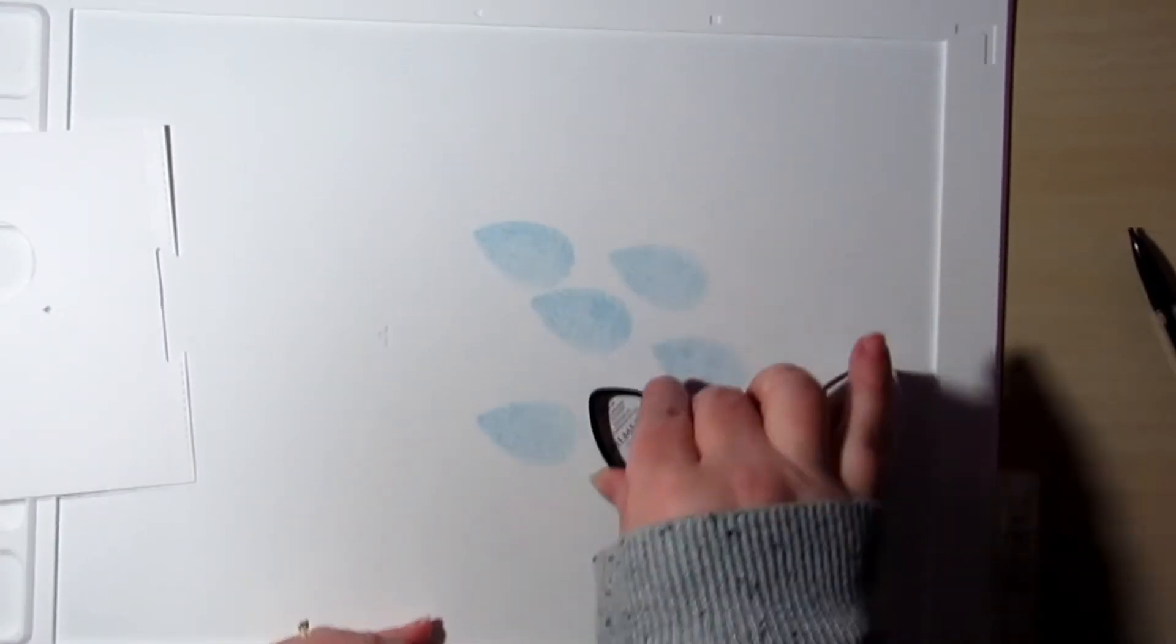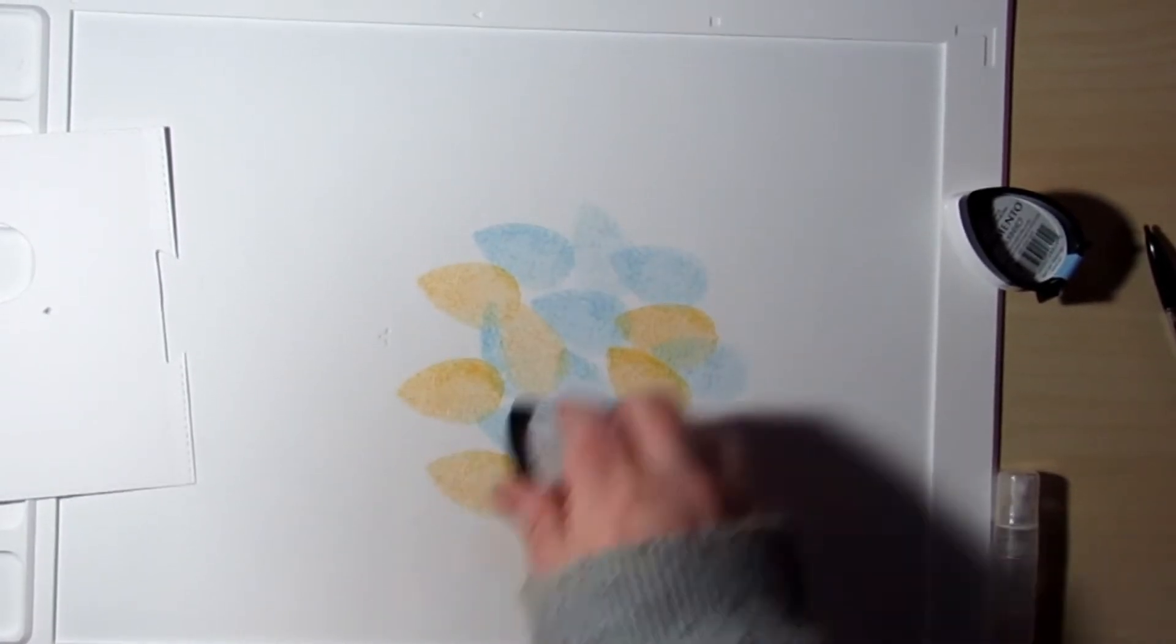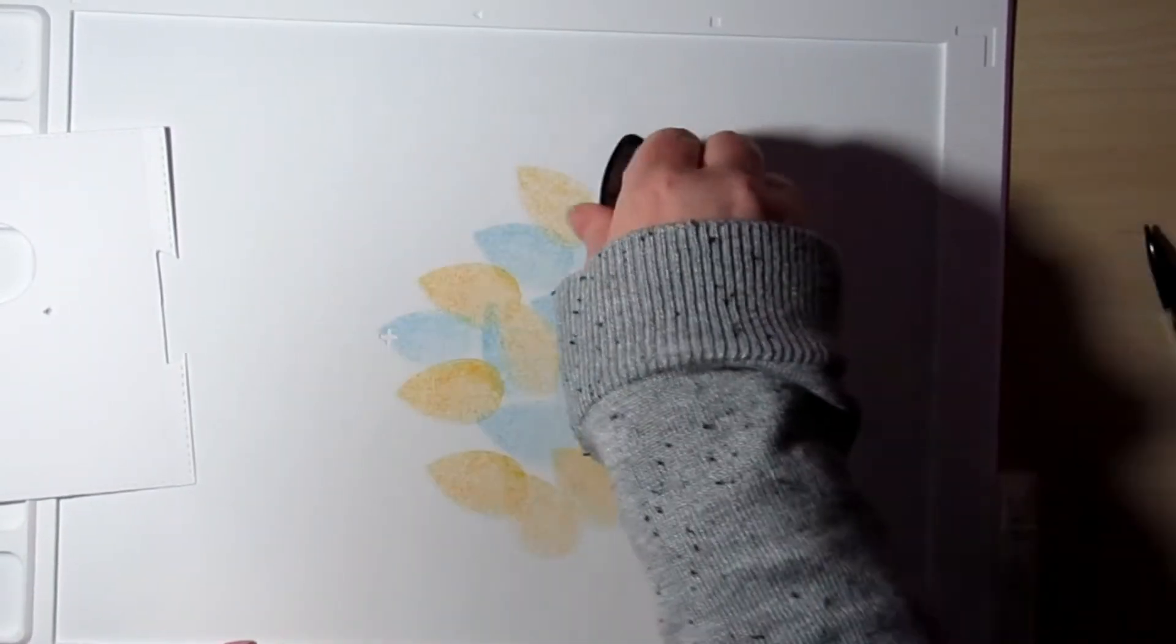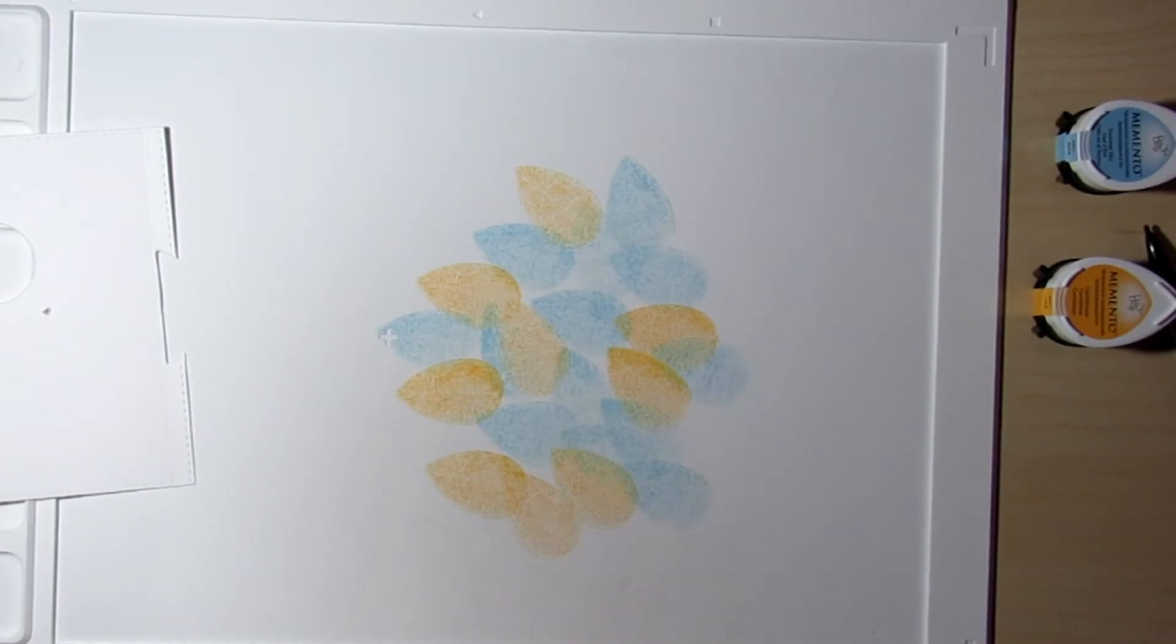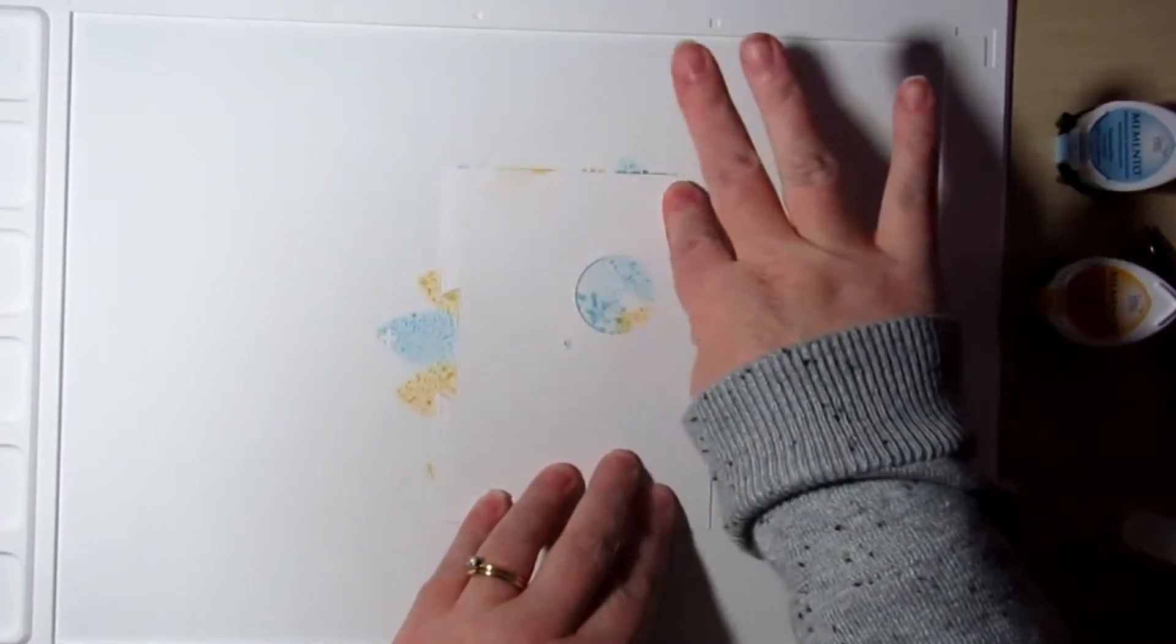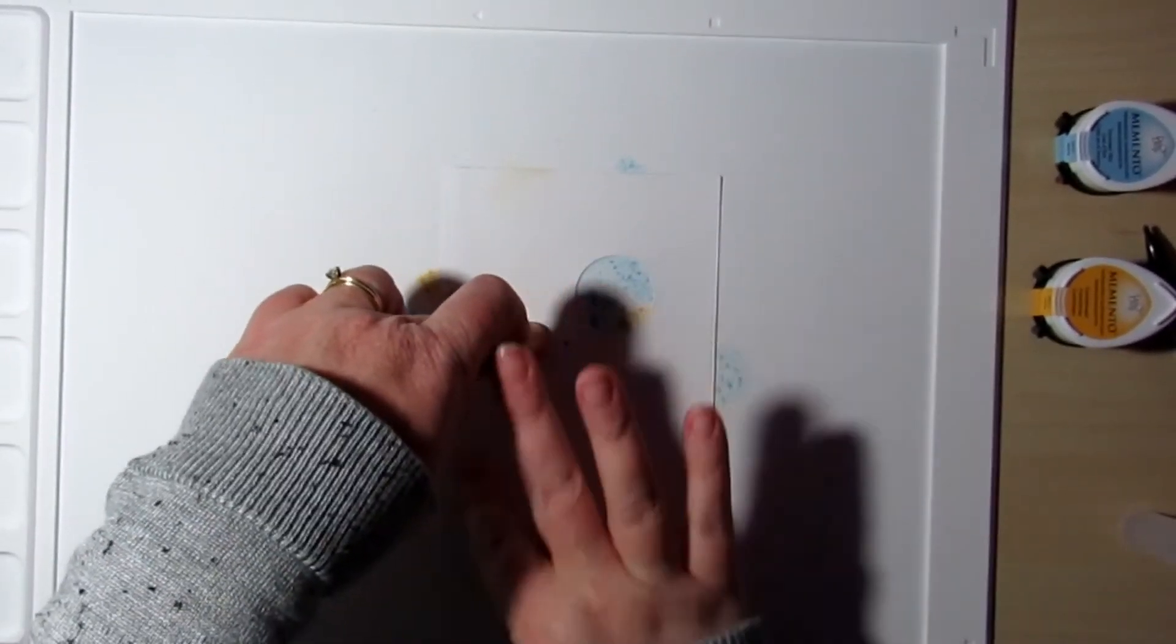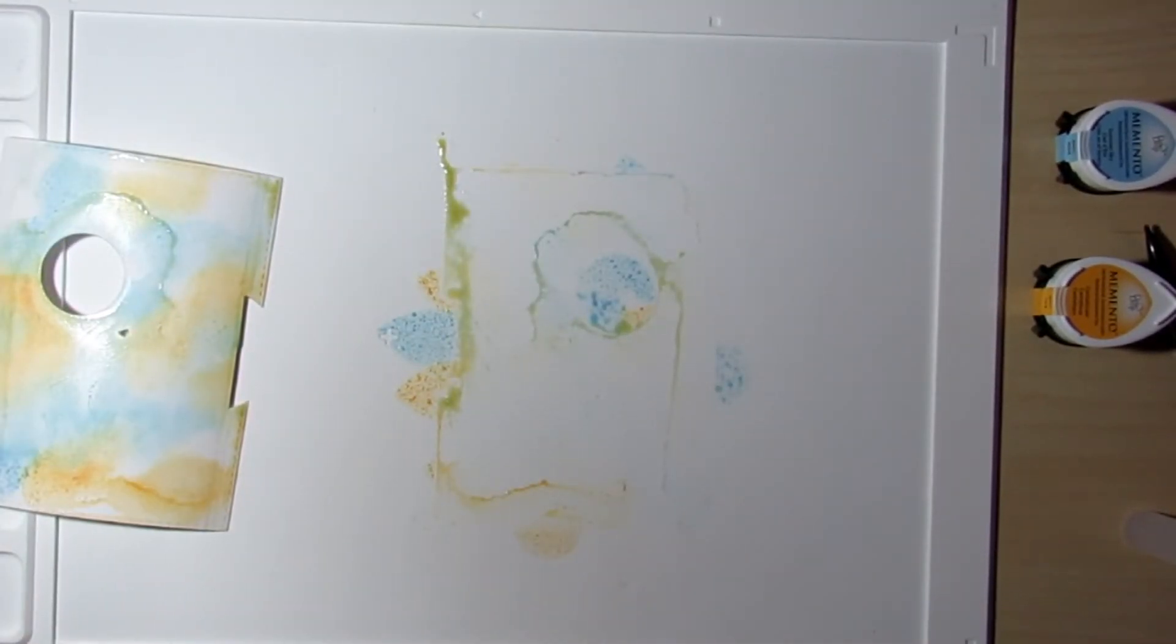So now back to my card panel, I'm using some Memento Dew Drop inks here. I'm using Summer Sky and Cantaloupe. And I'm just going to kind of make a watercolor background with these two colors. I'm going to go ahead and press my cardstock right on in there and pull that right off.